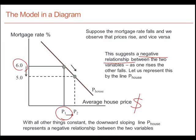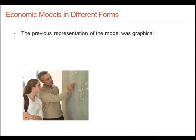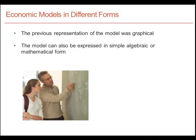We conclude this simple illustration by saying that with all other things held constant — that is to say, we haven't changed anything in the world other than the mortgage rate and allowed the house price to vary — the downward-sloping line represents a negative relationship between the two variables. The previous representation of the model was in graphical form, but we could also write the model in simple linear algebraic form — an equation for the line relating the mortgage rate to the price of houses.